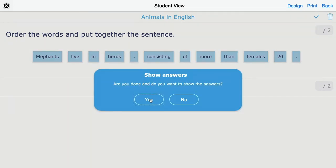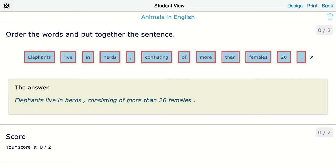I click on show answers. In this case, I have a zero out of two because I didn't, I wasn't able to configure the question the right way. I have a mistake right here of more than 20 females. So these two should be switched and I chose the option to just give a zero if just one thing isn't in the right place. Students get the correction right away so they can see what the right answer is.